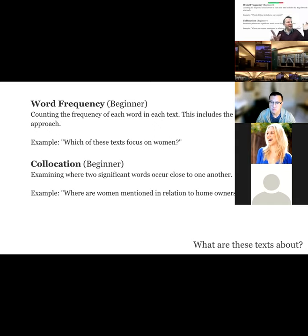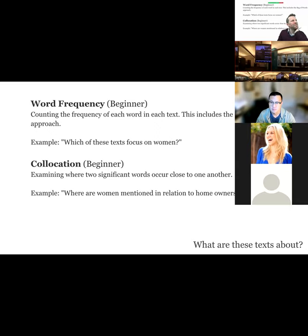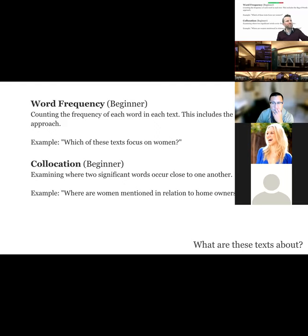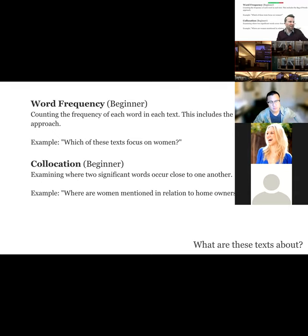One level beyond that, we can do co-location — examining where two significant words occur close to one another, whether right next to each other, three words apart, or in the same sentence or paragraph. The example is: where are women mentioned in relation to home ownership? Home ownership can be a two-word construction — what we call a bigram. You'd look at where those two things co-locate inside a text and then maybe close-read them, depending on your research needs.